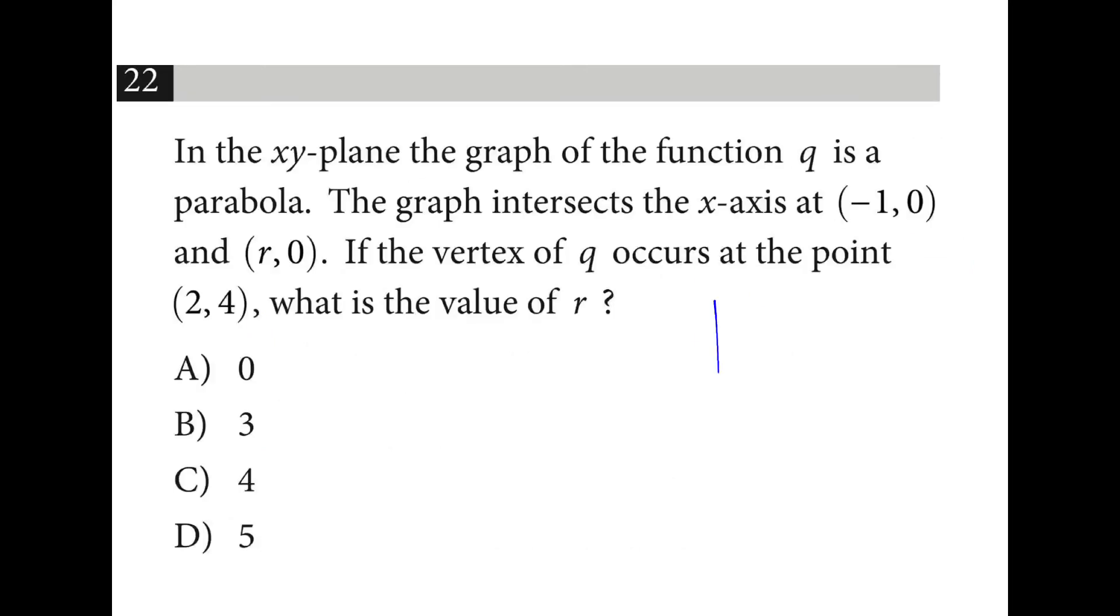There's two intercepts here at negative 1, 0, and r, 0. If the vertex occurs at 2, 4, well, notice we had to go over 1, 2, 3 to get to the vertex. So we'll go another 1, 2, 3. And r is going to equal to 5.